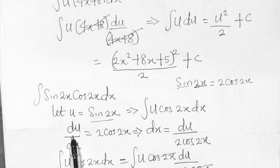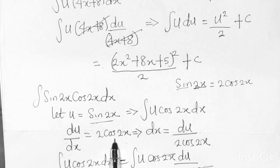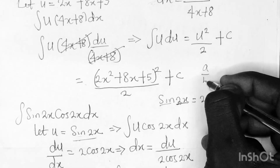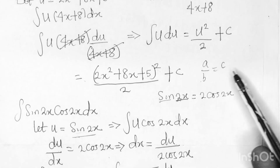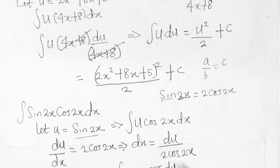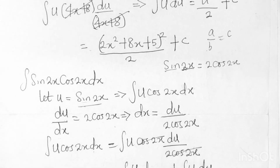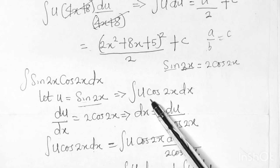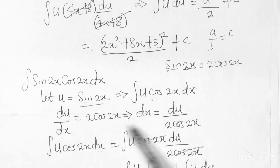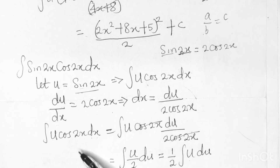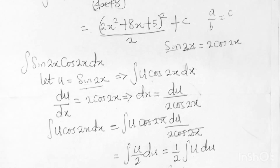Making dx the subject of formula: dx = du / (2cos2x). The equation is ∫ u·cos2x dx. Replacing dx gives ∫ u·cos2x · [du / (2cos2x)]. The cos2x cancels, leaving ∫ u / 2 du, or 1/2 · ∫ u du.